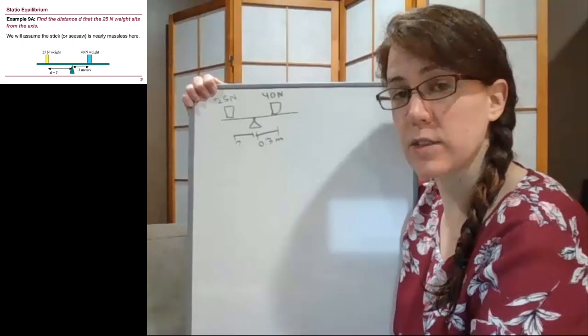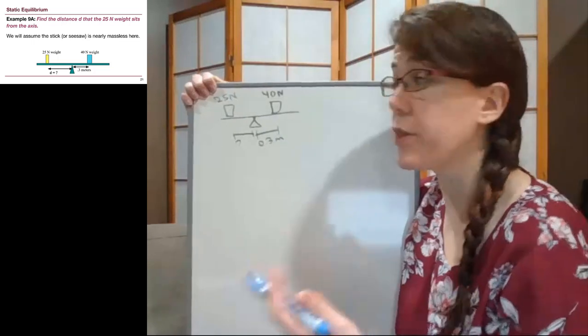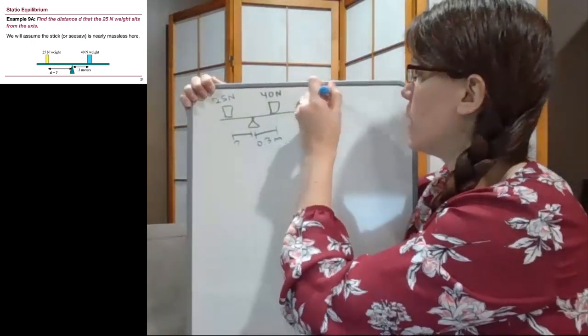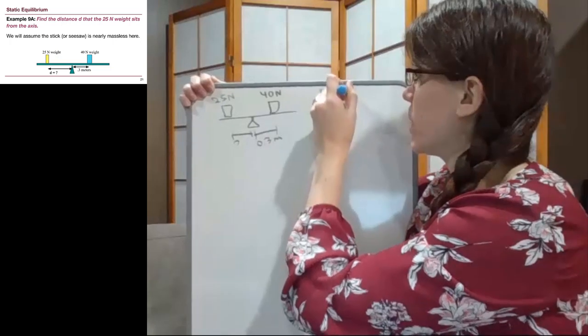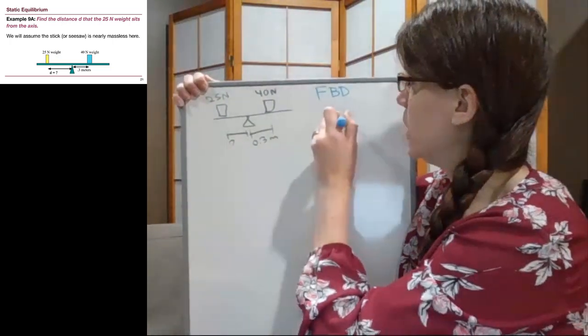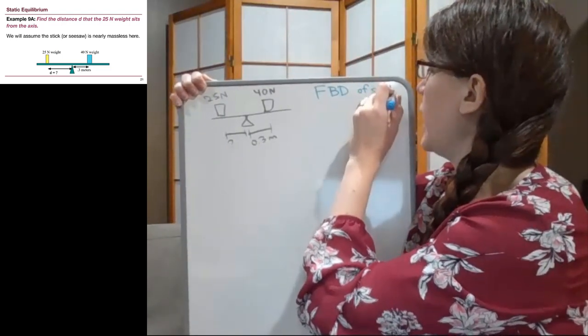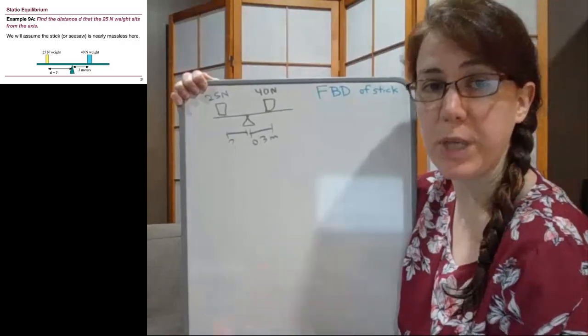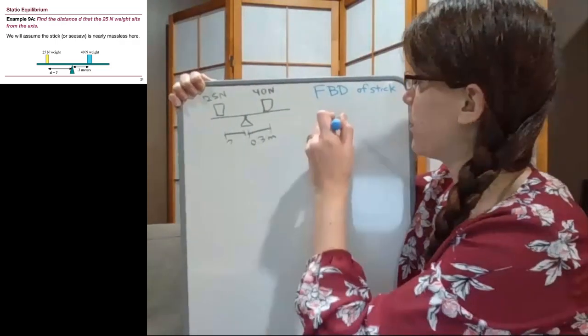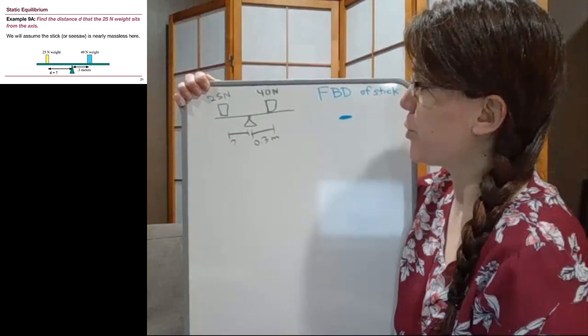The next thing that is useful for us to draw is a free body diagram. If we're thinking about forces, we're thinking about a force diagram. So I'm going to write FBD for free body diagram. It's a force diagram of the stick, all of the forces that are acting on that beam, or stick, or seesaw, whatever we want to think about it.